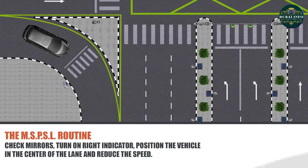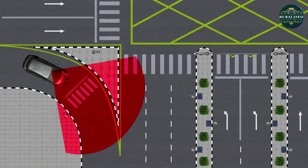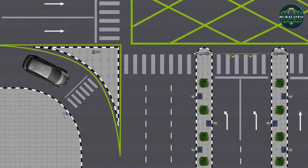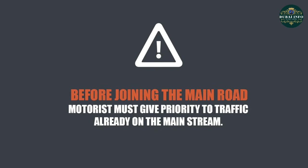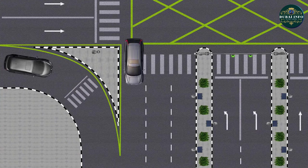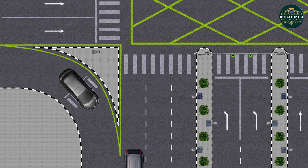Check mirrors, turn on right indicator, position the vehicle in the centre of the lane and reduce the speed. Look around for potential hazards such as pedestrians or cyclists at the pedestrian crossing in the middle of the slip lane and vehicles on the main stream. Before joining the main road, motorists must give priority to traffic already on the main stream. Check traffic and match speed to fit safely into the traffic flow on the lane next to the slip lane.